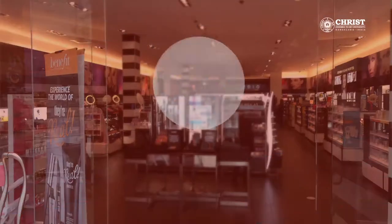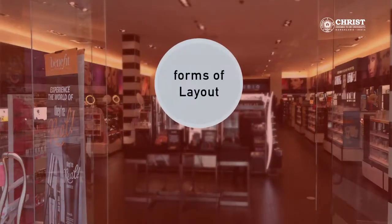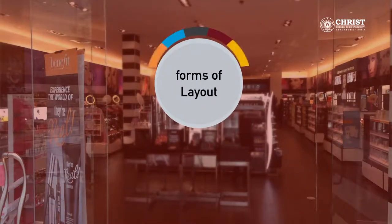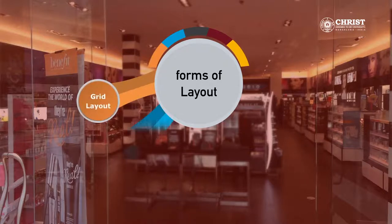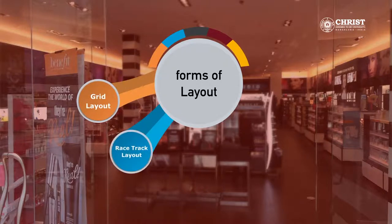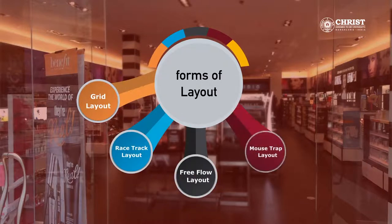Now we will discuss about the various forms of layout. There are totally five different forms of retail layout. They are grid layout, racetrack layout, free flow layout, mouse trap layout, and spine form layout.